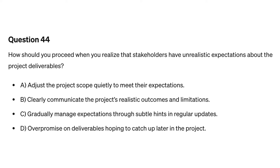Question forty-four. How should you proceed when you realize that stakeholders have unrealistic expectations about the project deliverables? A. Adjust the project scope quietly to meet their expectations. B. Clearly communicate the project's realistic outcomes and limitations. C. Gradually manage expectations through subtle hints in regular updates. D. Overpromise on deliverables, hoping to catch up later in the project.